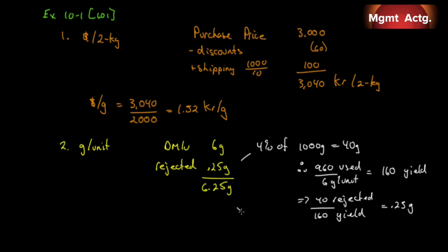The other way to get it is to follow the question. The six grams represent 96 percent. So 6 divided by 0.96 is 6.25. And since 6 grams are used, 0.25 grams are rejected. So we can do it one of two ways. So there we go. 6.25 grams is our standard quantity.